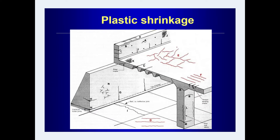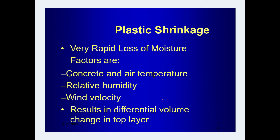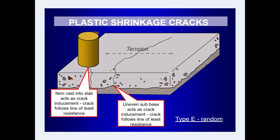Moving to the next type — plastic shrinkage cracks, shown as types D, E, and F in the diagram. The factors causing rapid loss of moisture in the early stage of placing concrete include surrounding temperature, concrete temperature, relative humidity, and wind velocity. These factors also influence plastic shrinkage cracks. All these factors result in differential volume change in the top layer.